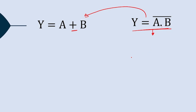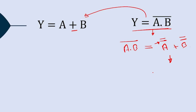De Morgan's theorem states that (A·B)̄ = Ā + B̄, so we can rewrite the NAND output in that form. This looks similar to what we want, but we have Ā + B̄ instead of A + B. If we could replace Ā and B̄ with Ā̄ and B̄̄, we would get A + B. So we need double bars on both A and B.